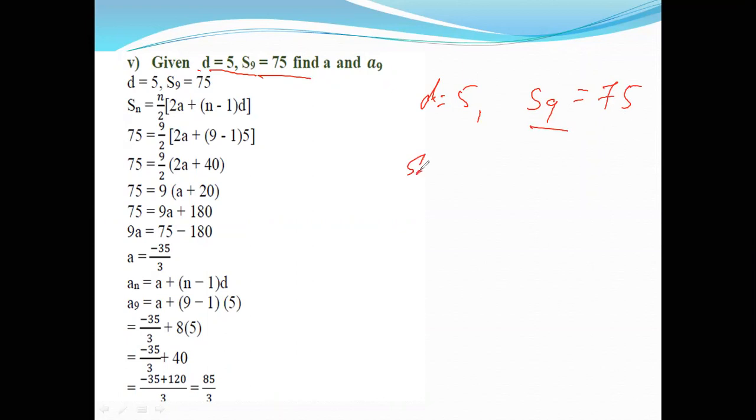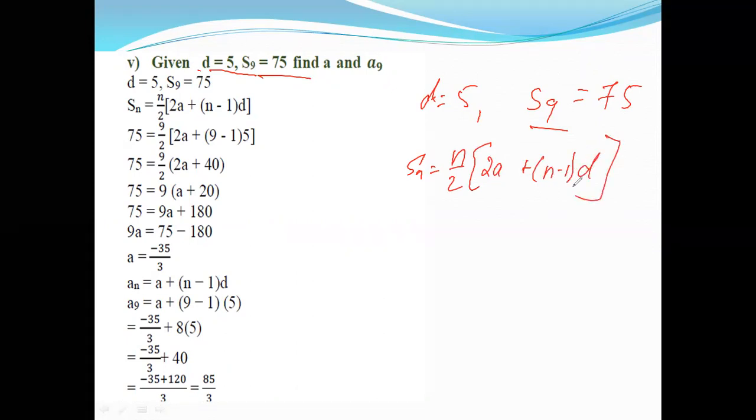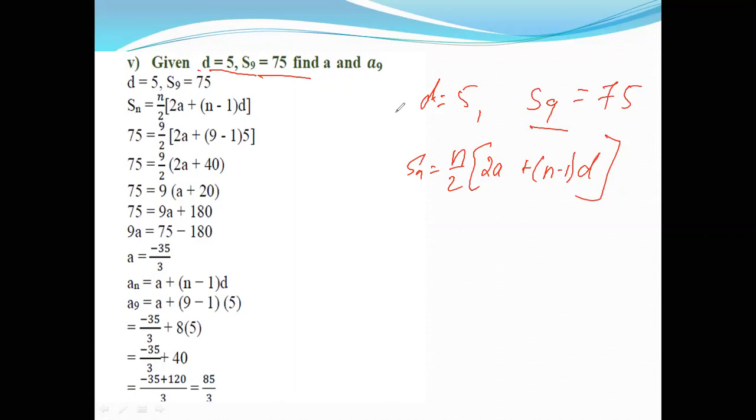We will use the Sₙ formula directly: Sₙ is equal to n by 2 times [2a plus (n minus 1) into d]. In the formula, we can directly use n. When n is used, we have n is equal to 9.